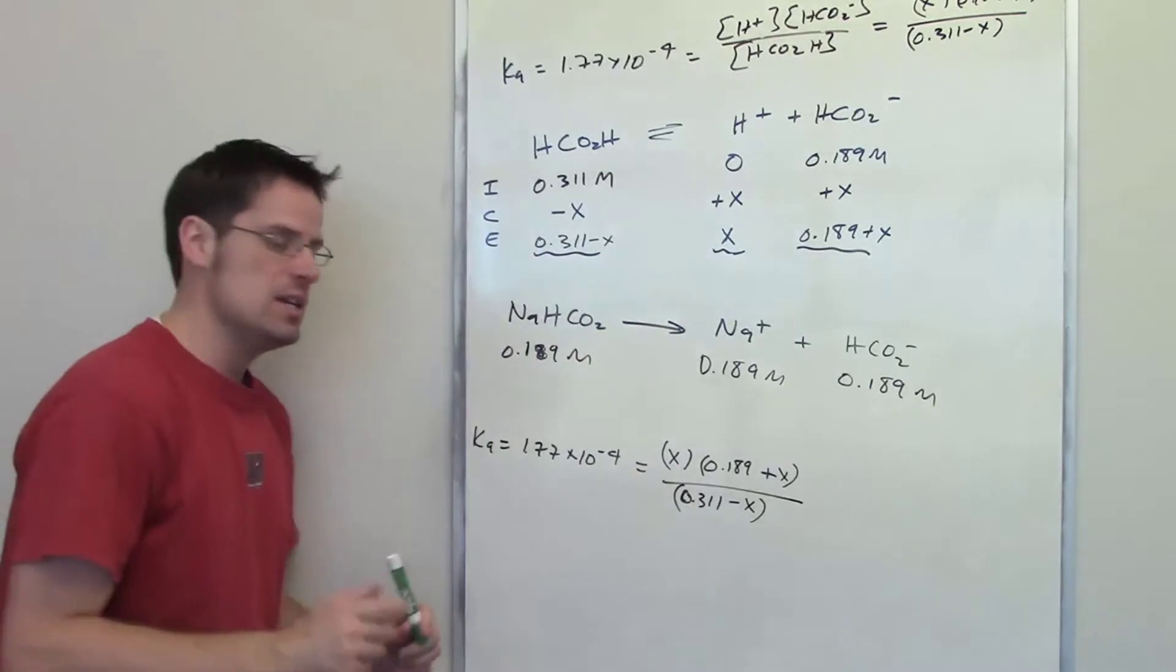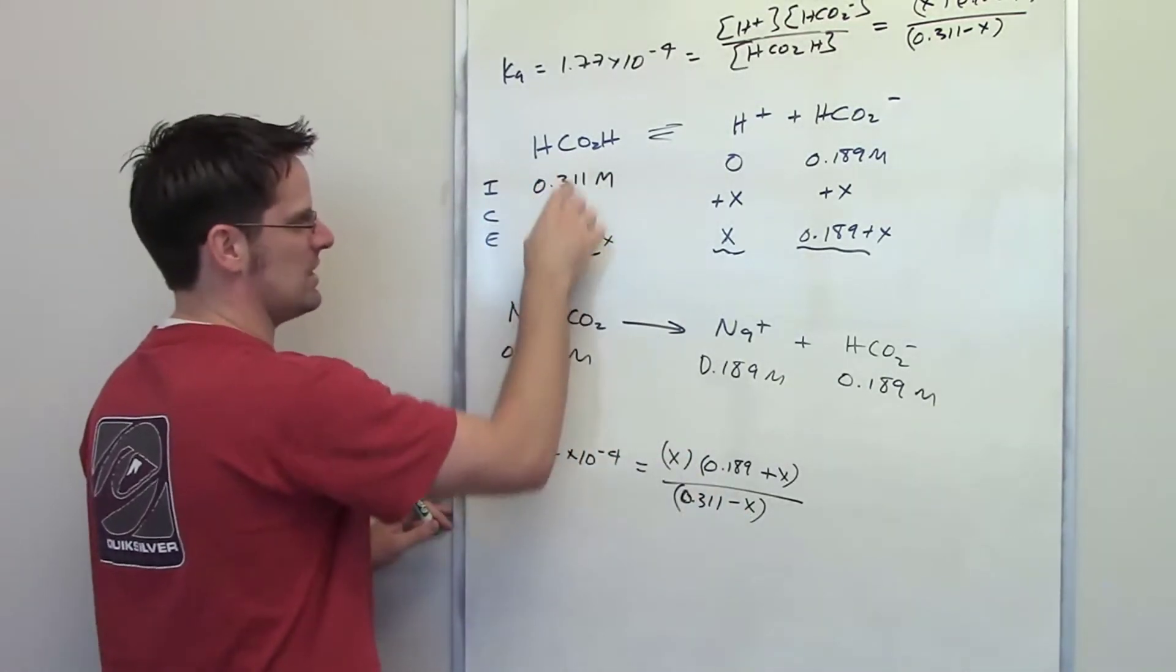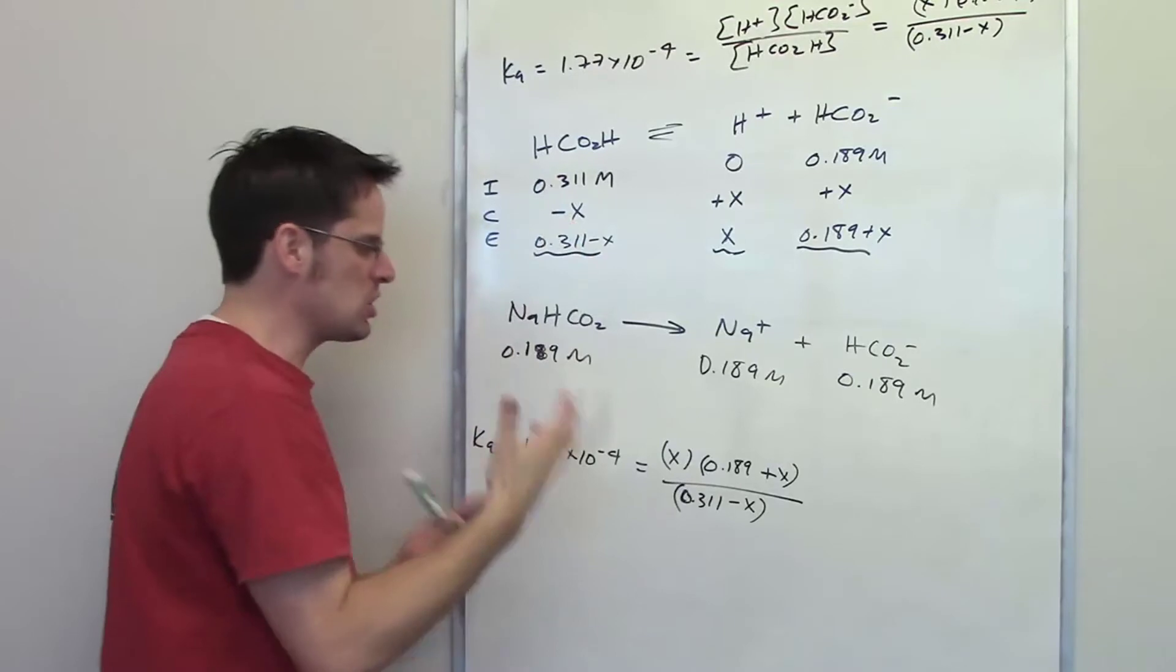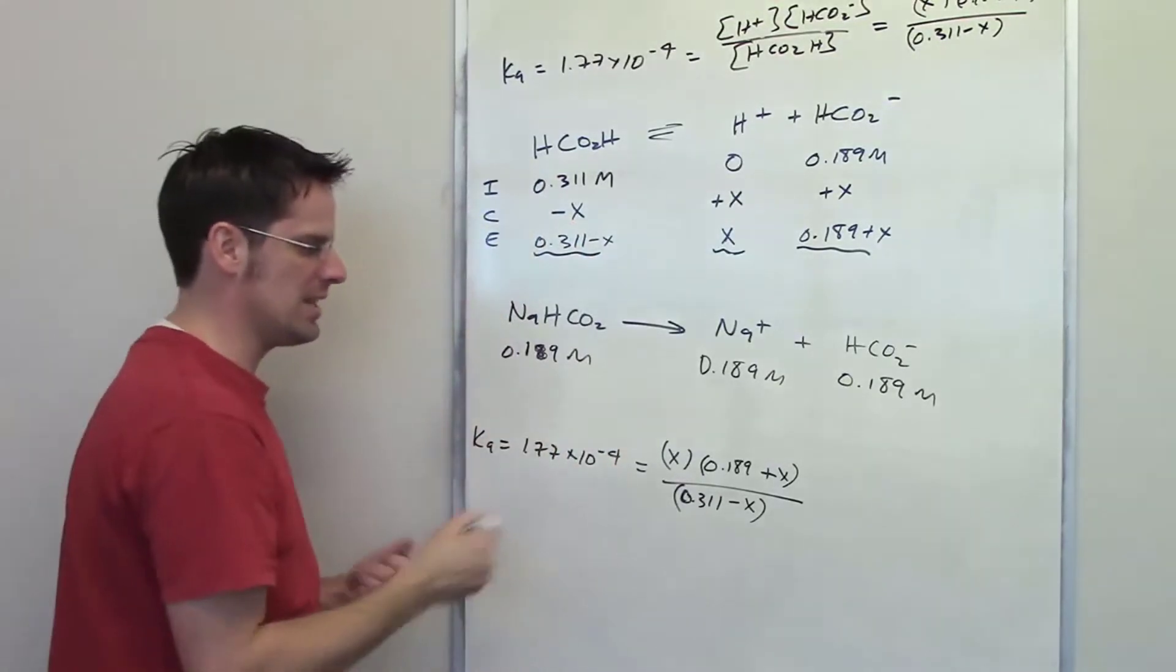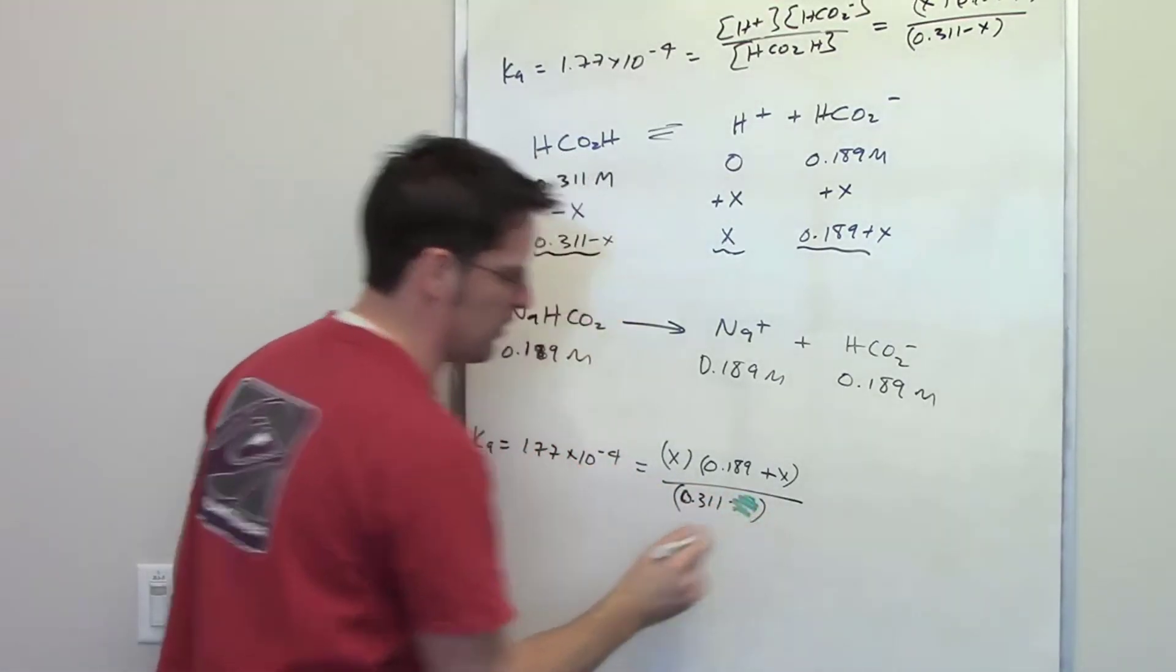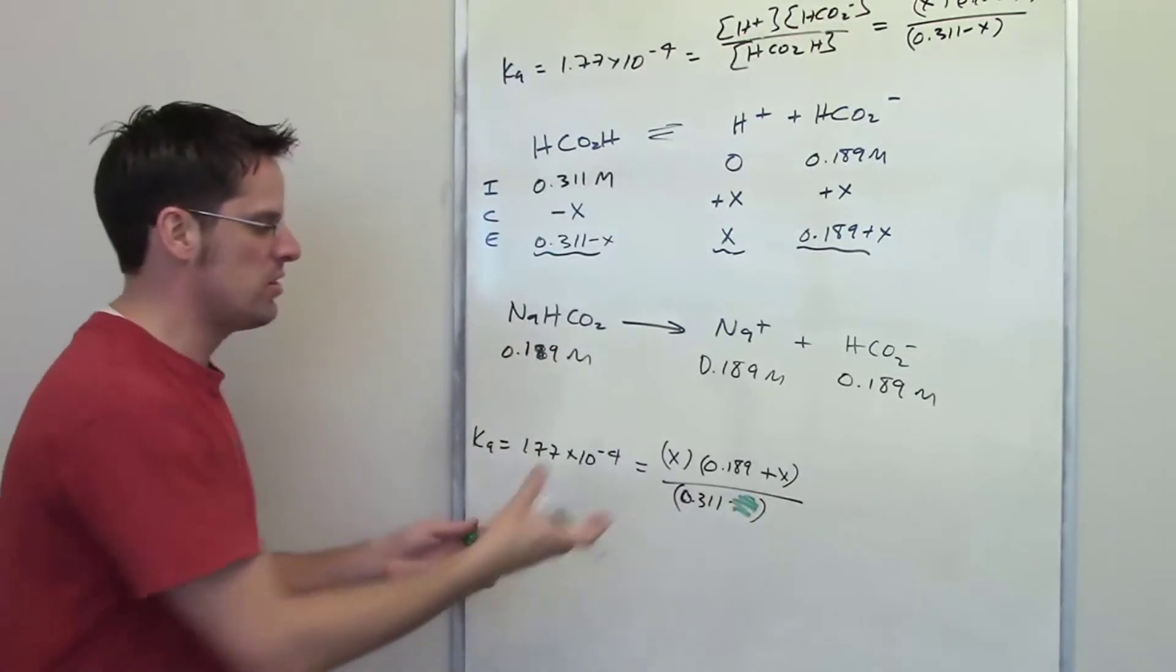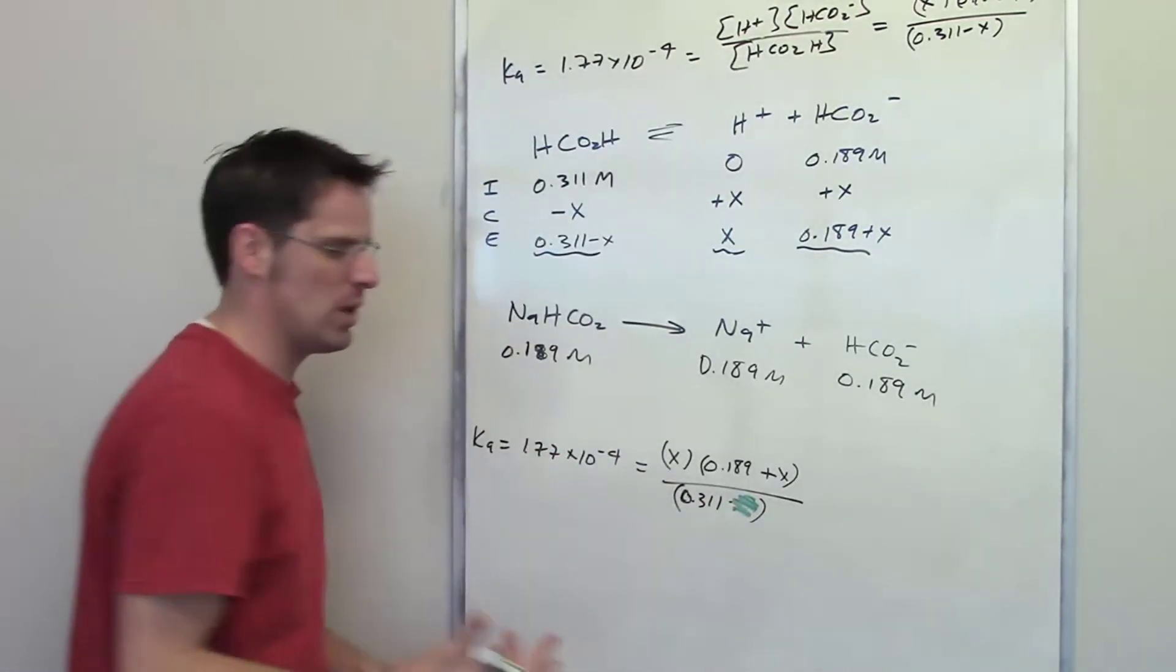These X values, because you're dealing with a weak acid, are going to be so small compared to 0.311 that you can basically throw it out. If you actually had the number X, threw it in there and subtracted it from 0.311, the answer would be so close to 0.311 that you can just ignore it.